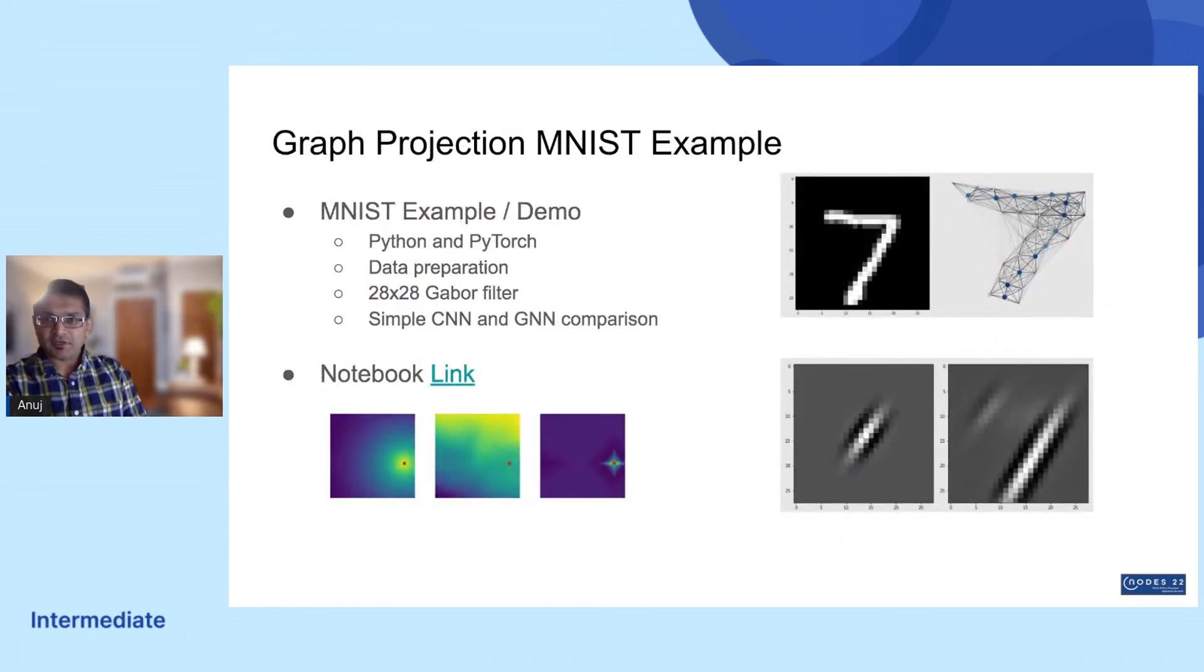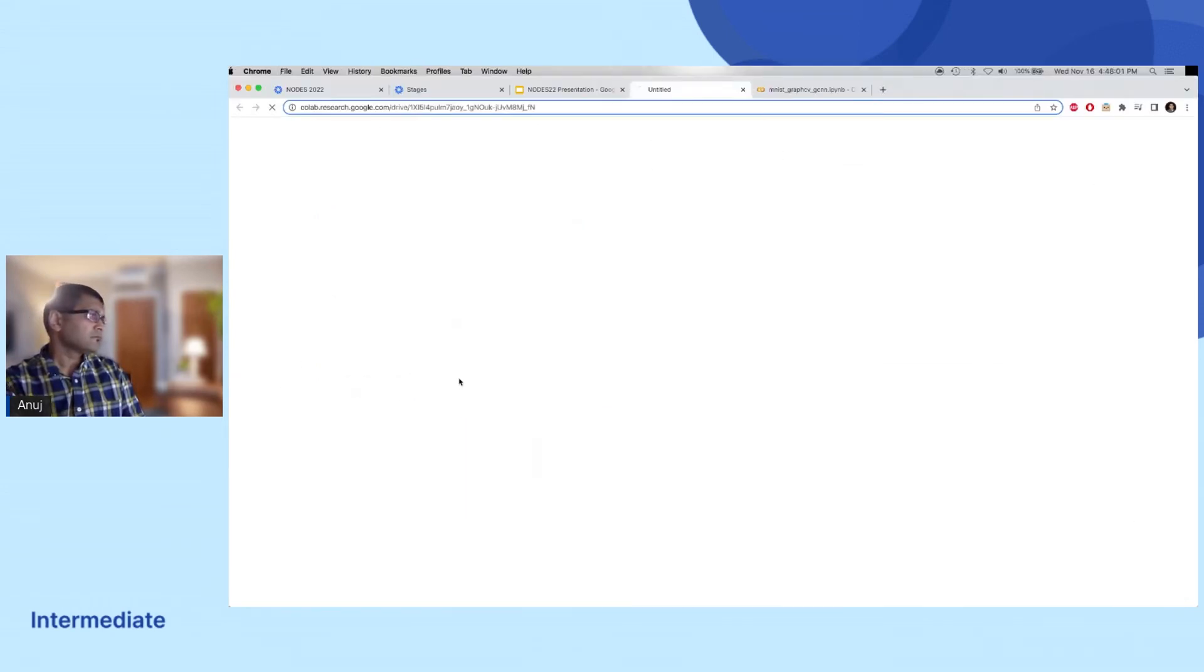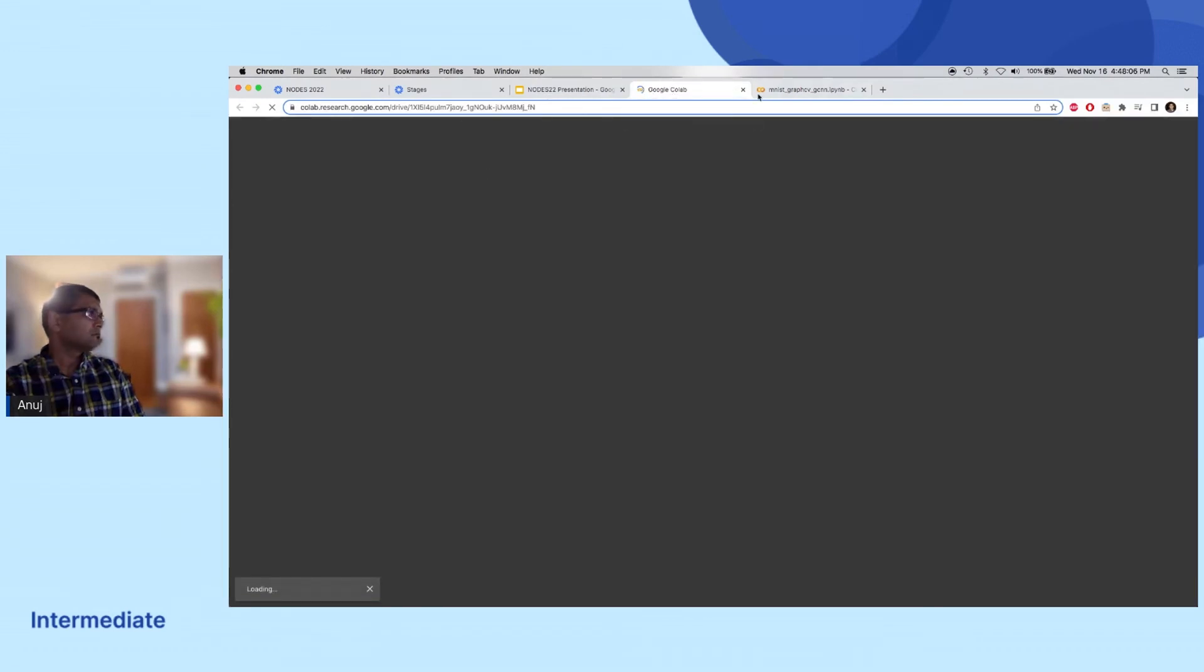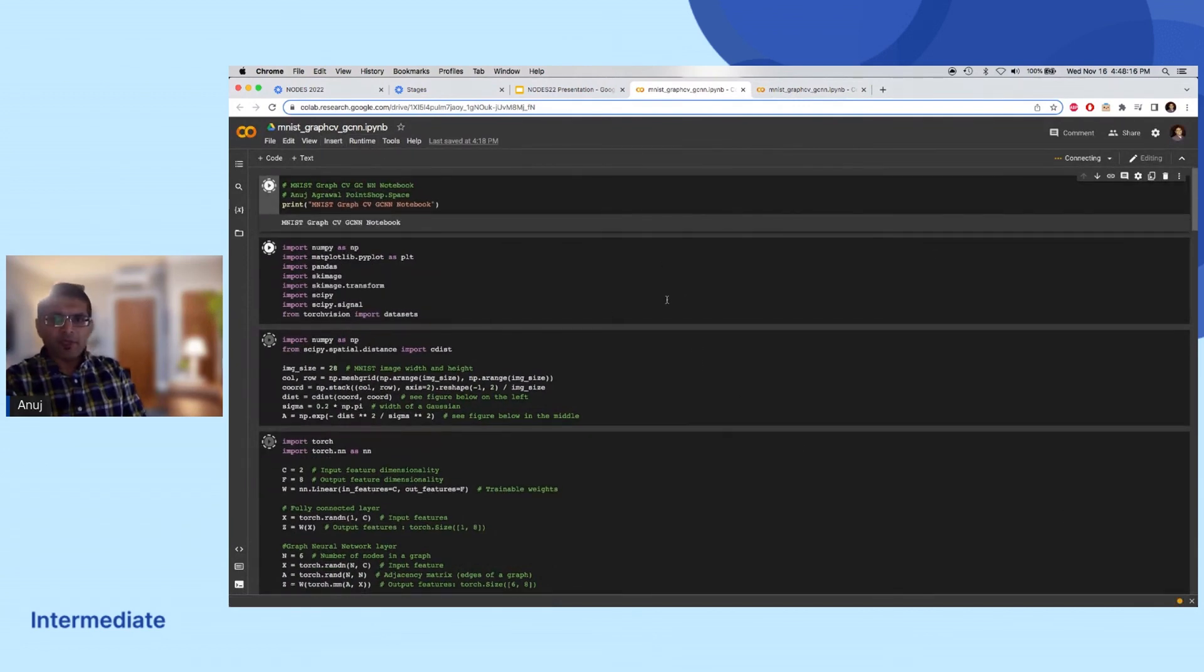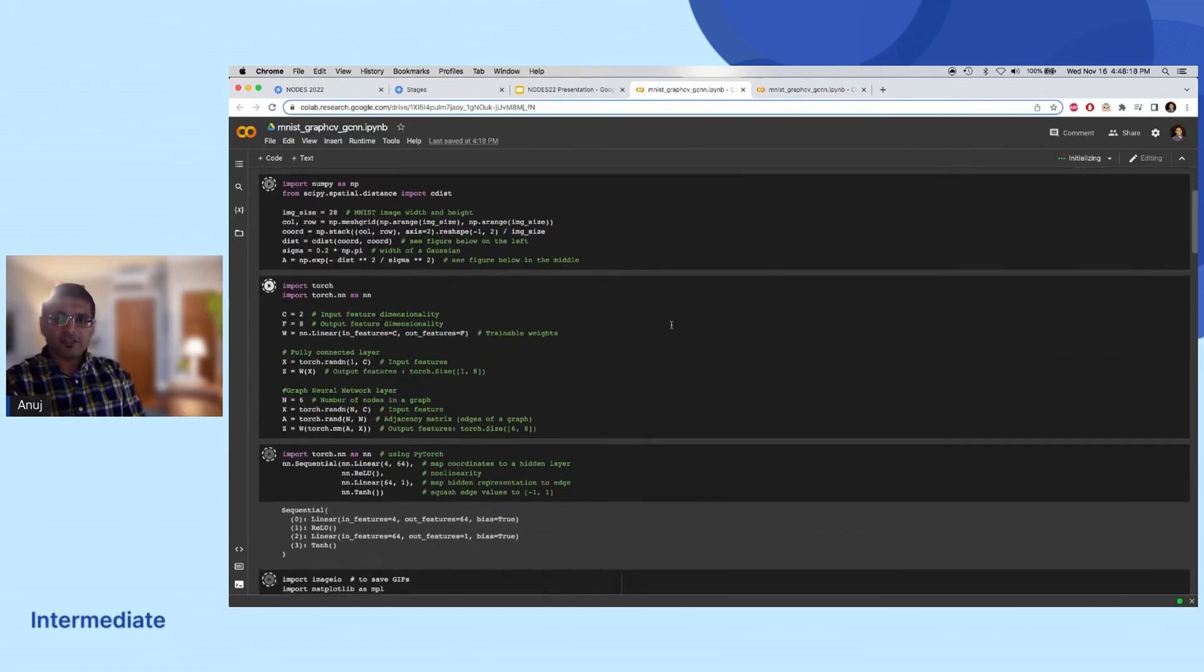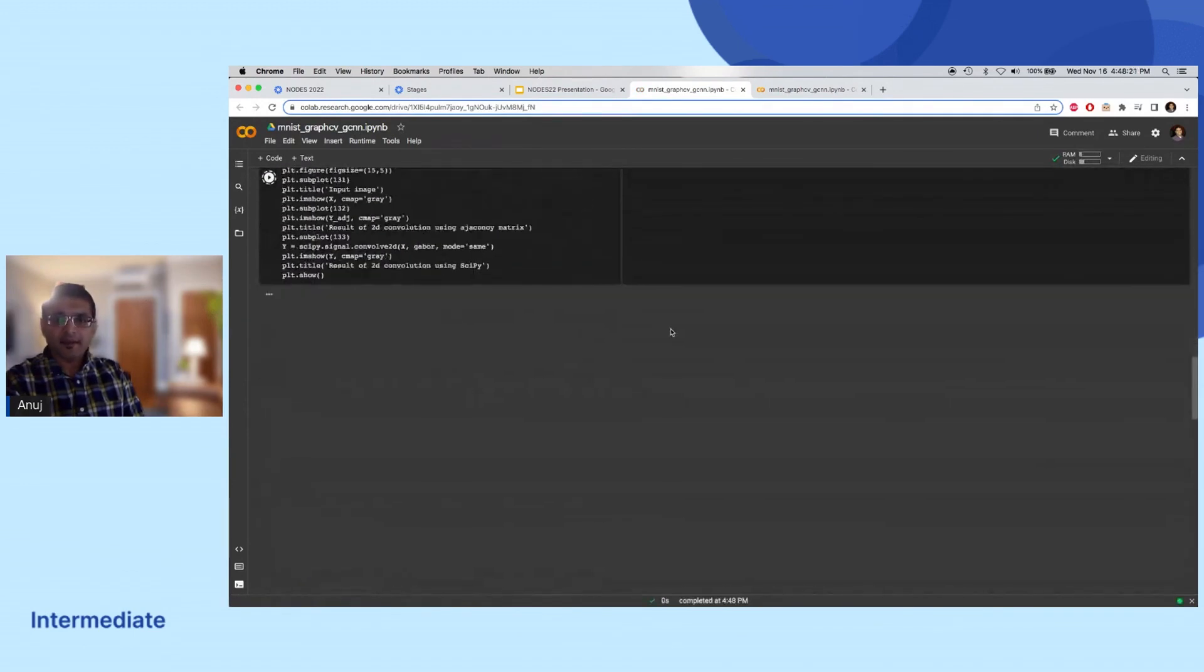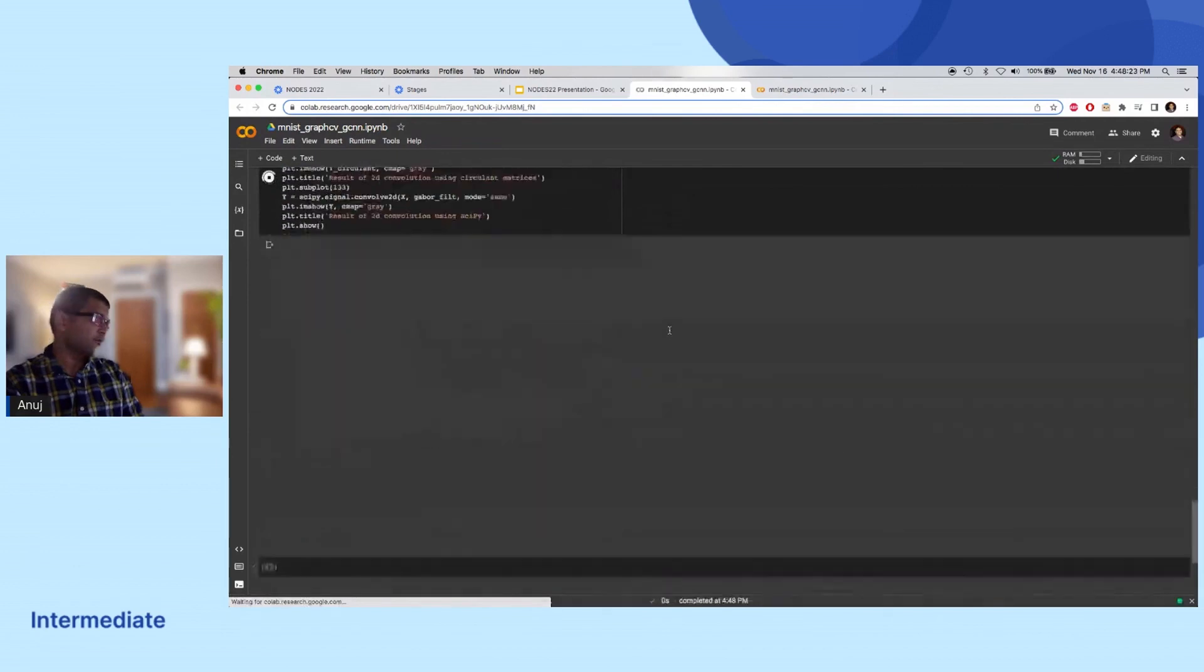We've created an example MNIST digit classifier using Python and PyTorch, which goes through some of these steps, including a comparison between CNNs and GNNs using a Gabor filter and a doubly circulant matrix. I won't be going through this in detail here and instead share it later so as to review at your own convenience. I'll have my contact information at the end if you'd like to reach out.